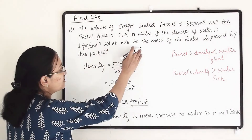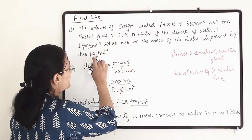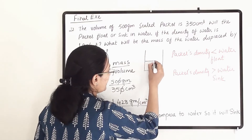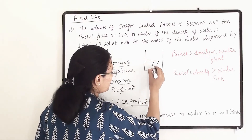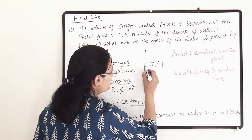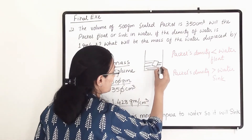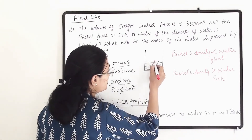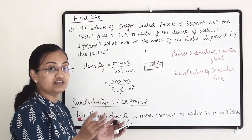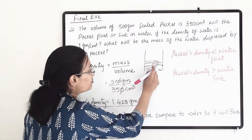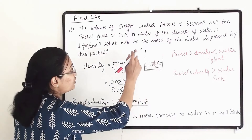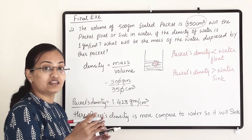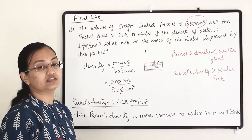The next question asks: what will be the mass of water displaced by the packet? If the packet is kept inside the water, the water displaced equals the volume of the packet. The volume of the packet is 350 centimeter cube, so equally that much volume of water will be displaced by the packet.